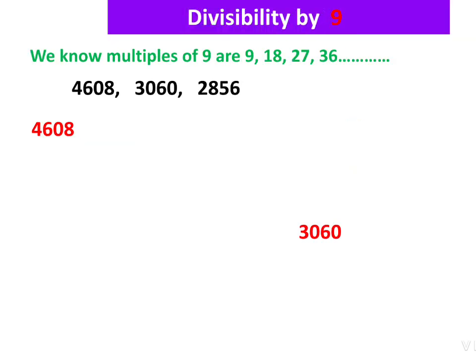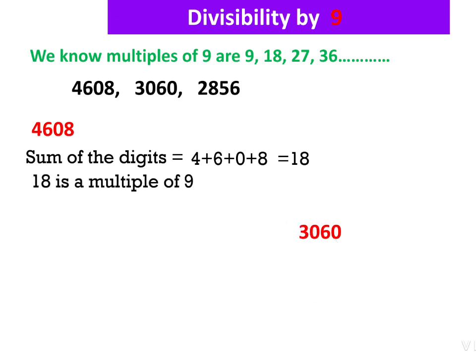Next, divisibility by 9. Divisibility by 9 is the same as divisibility by 3. In divisibility by 3, we add the digits and check if the sum is a multiple of 3. Here, we add the digits and check if the sum is a multiple of 9. Multiples of 9 are 9, 18, 27, 36, etc. Our first question is 4,608: the sum of digits is 4 + 6 + 0 + 8 = 18. Since 18 is a multiple of 9, 4,608 is divisible by 9.